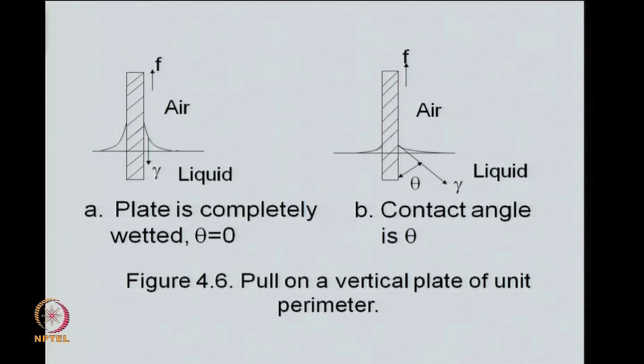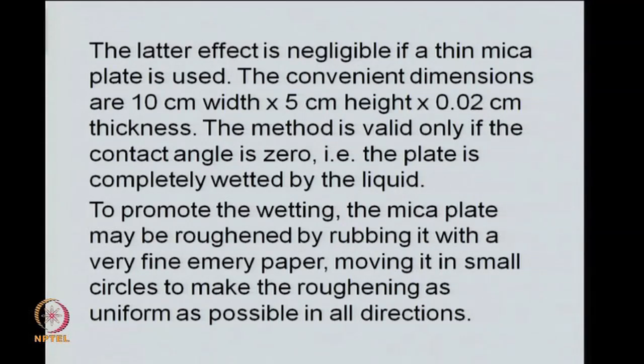We have here two sketches for a plate of solid being withdrawn from the liquid. In the first part A, this solid is completely wetted. So theta equal to 0 and therefore, you see the vertical force applied is F, the surface tension is almost acting vertically here. If theta is 0, the surface tension will act vertically downward. However, if the contact angle is not 0, then we have certain theta here, the surface tension would not act vertically. We require for this method for F to give you the surface tension, we require contact angle to be 0 or this liquid to weight the solid. So that angle is actually 0.